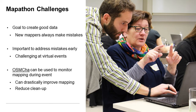Mapathons are a big part of Missing Maps. They're a great way to introduce people to OpenStreetMap and humanitarian mapping, but they aren't without their challenges. There are a lot of instructions to give, a lot of concepts to pick up, and everyone needs a different level of support. The goal of mapathons should always be to create good quality data, but after a mapathon with brand new mappers, there can be a bit of cleanup required to get the data to where we want it to be. That's why it's important to provide extra support to those who are struggling with mapping. It's especially important to catch mistakes early on during the event, so that the mapper can correct them and not repeat the mistakes, causing more work to clean up.